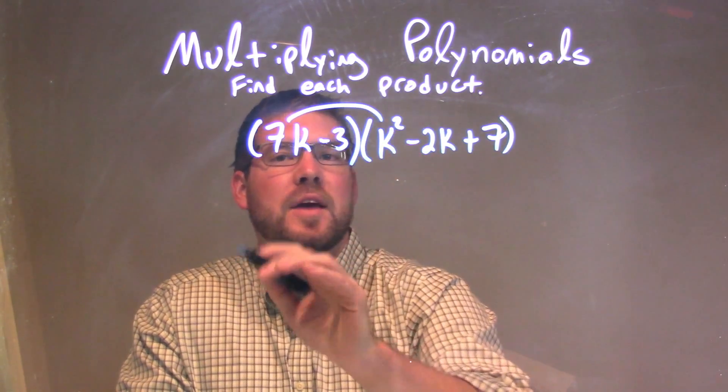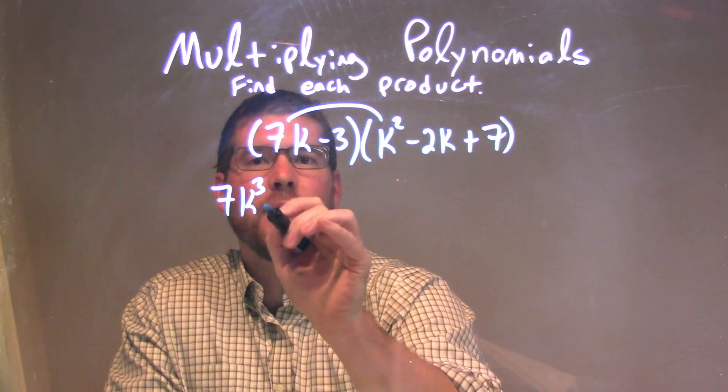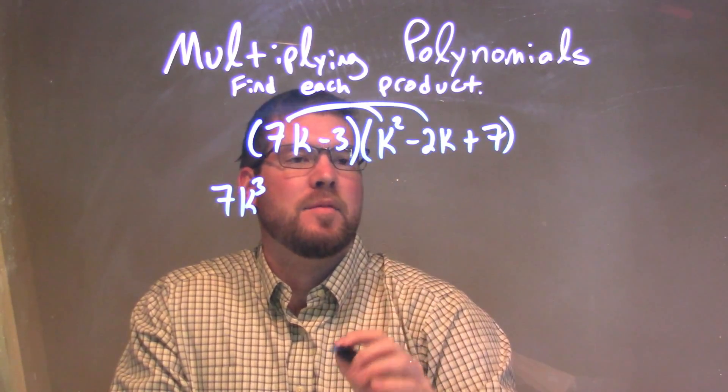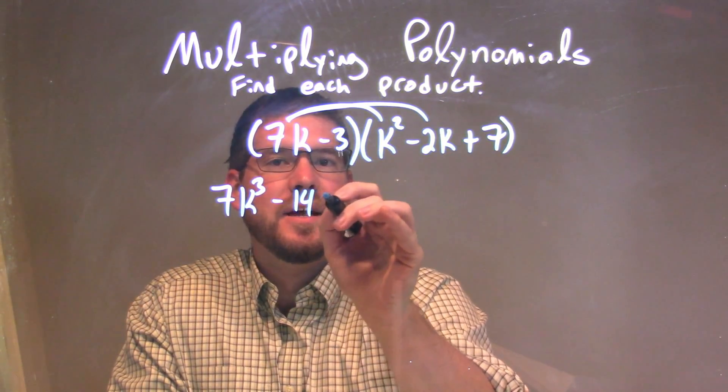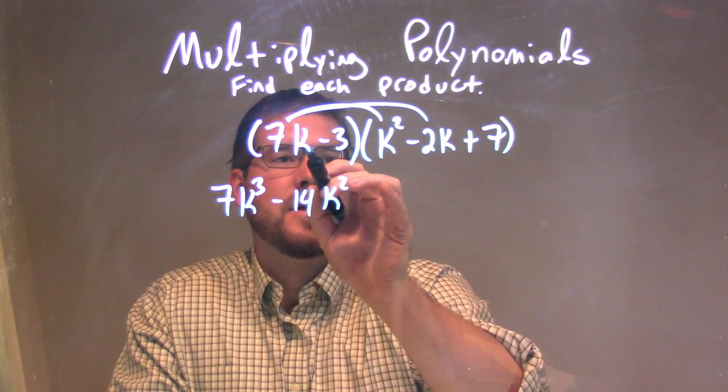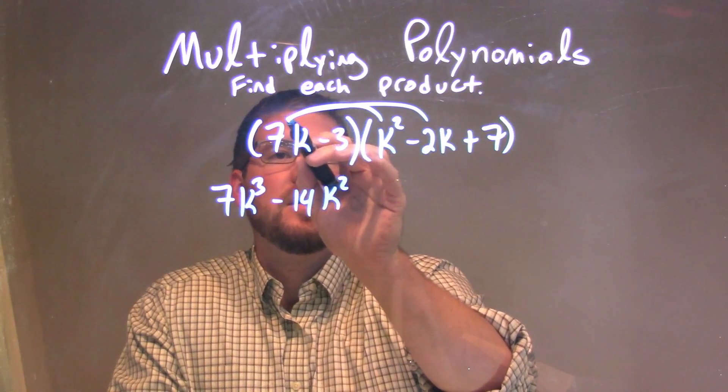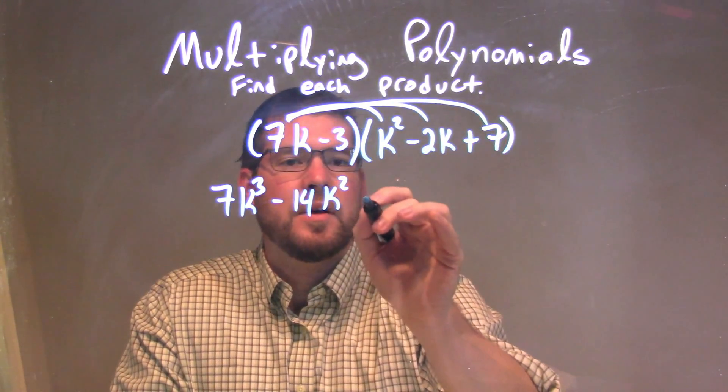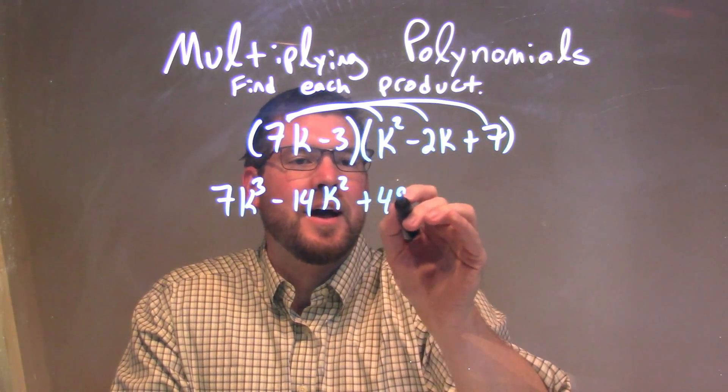So 7k times k squared is 7k to the third power. 7k times minus 2k is minus 14k squared. 7k times 7 is plus 49k.